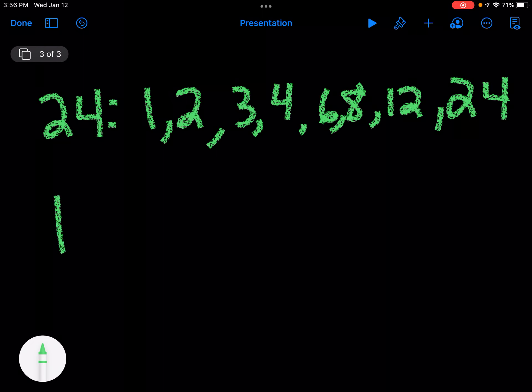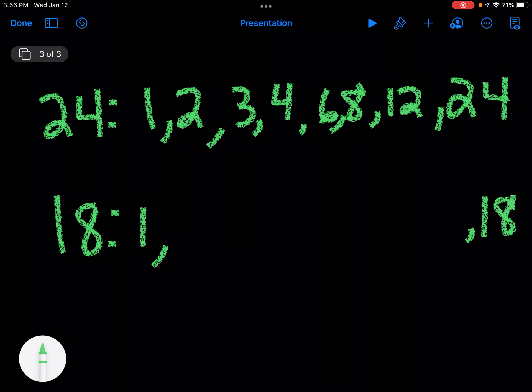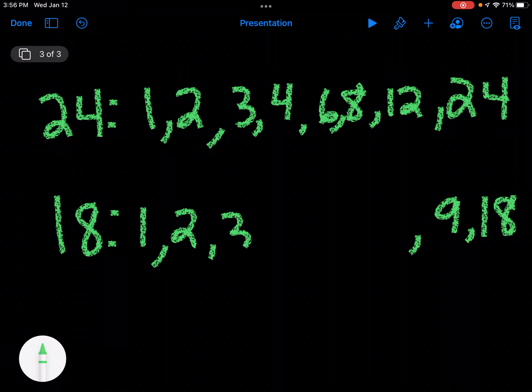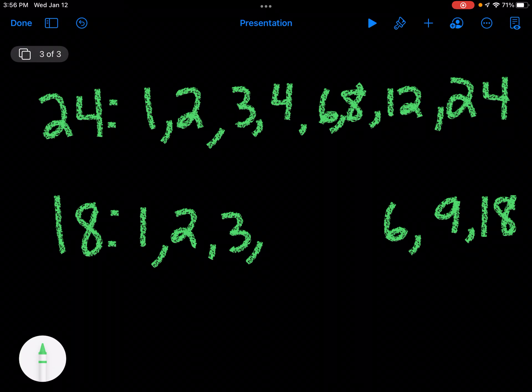And let's look at a number like 18. Let's compare those. So that would be 1 and 18, 2 and 9, 3 and 6. Well, 4 doesn't go in. 5 doesn't go in. And then I hit 6. So I know I've got all my factors.